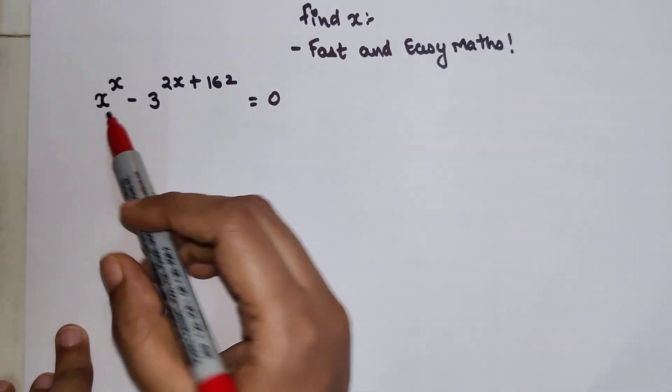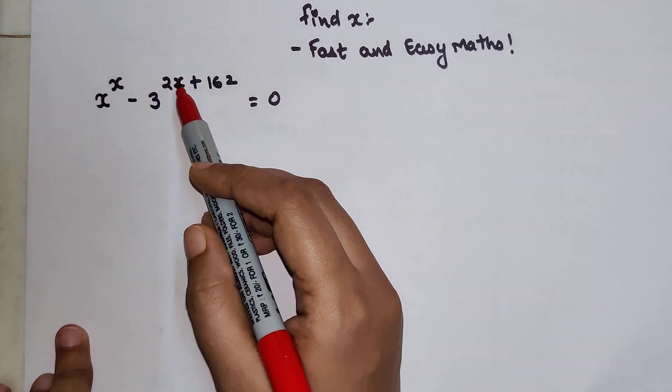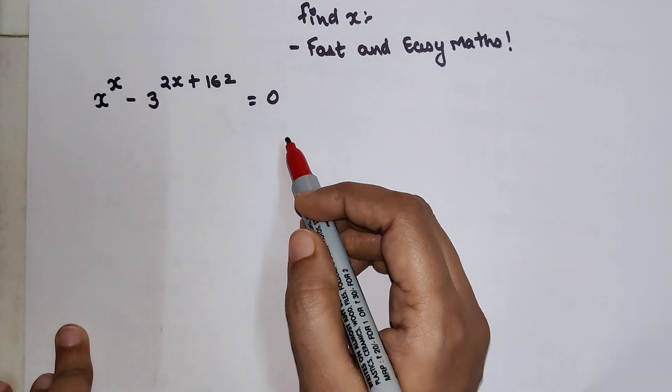So here, see what we have is x raised to x minus 3 raised to 2x plus 162 equals 0.